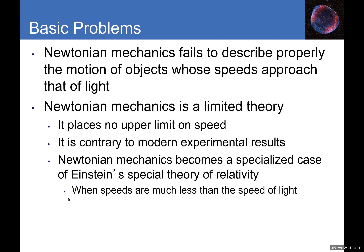Newtonian mechanics is a limited theory — it places no upper limit on speed, meaning according to Newton you could move faster than the speed of light in vacuum. But experiments don't agree. Experiments show there is a speed limit: 3×10⁸ meters per second. Only light can move at that speed, and only in vacuum — light actually slows down in denser media. Nothing else can move at the speed of light, and nothing can move faster. That's already a contradiction with Newtonian mechanics.